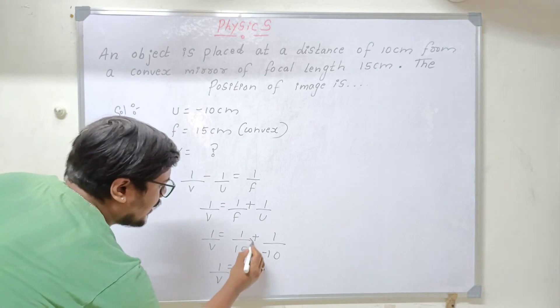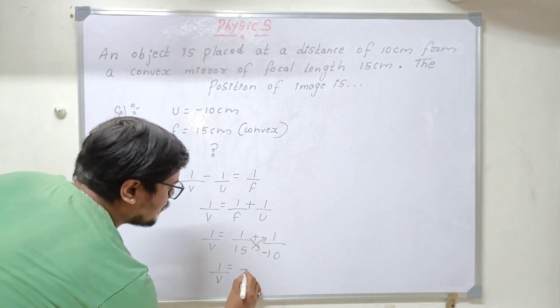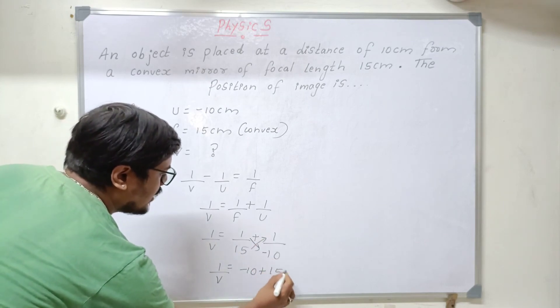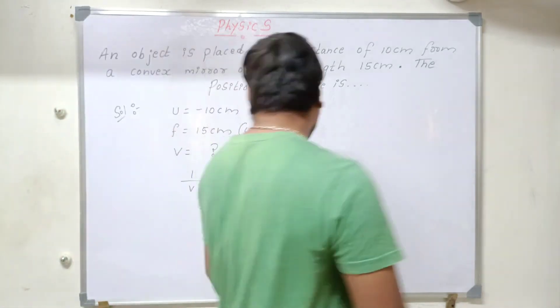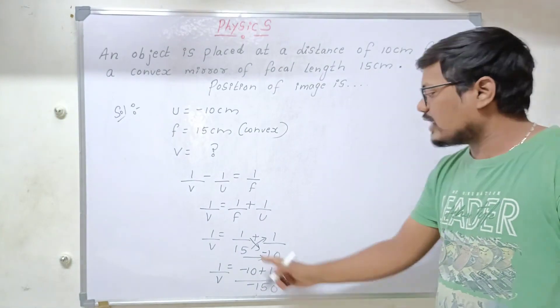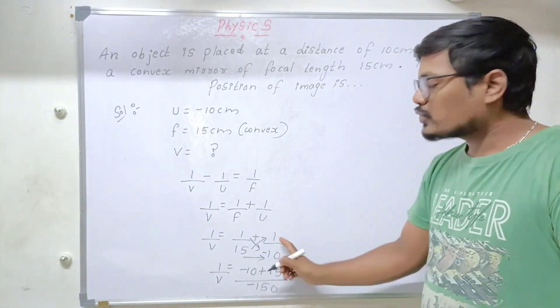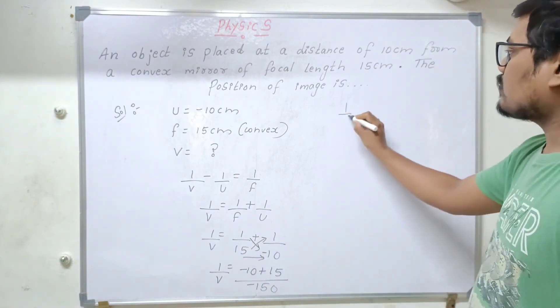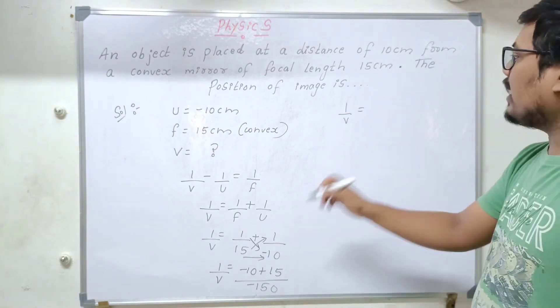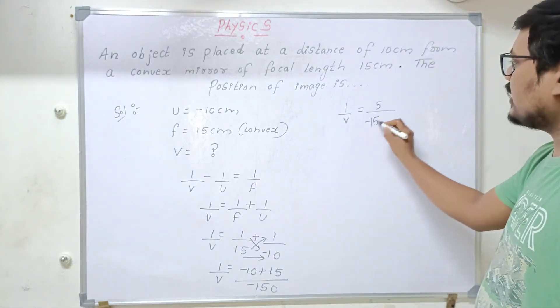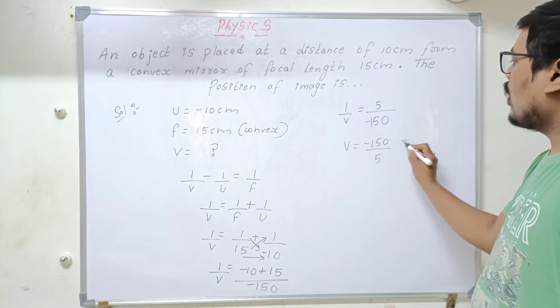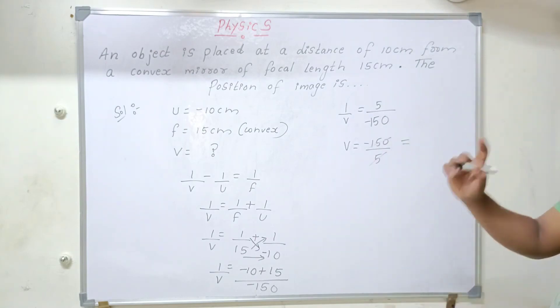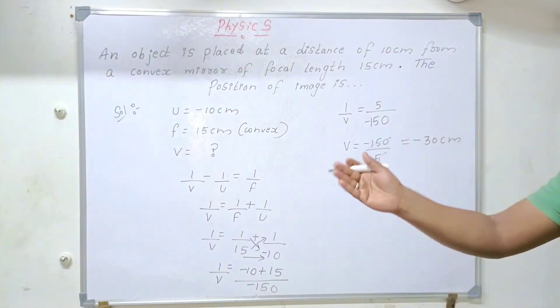Now 1 by V equals cross multiply, 1 into minus 10 is minus 10, plus 1 into 15 is plus 15, divided by multiply the denominator you will get minus 150. I didn't do the LCM method, I went with cross multiplication. 1 into minus 10 is minus 10, 1 into 15 is 15, denominator I multiplied. Now I will get 1 by V equals 15 minus 10 is 5 divided by minus 150. Reciprocal this because I want V value. V equals minus 150 divided by 5. How many times in 5 table 15 we can cancel? 3 times. So minus 30 centimeter is the V value. This is the position of the image which will be in front of the mirror.